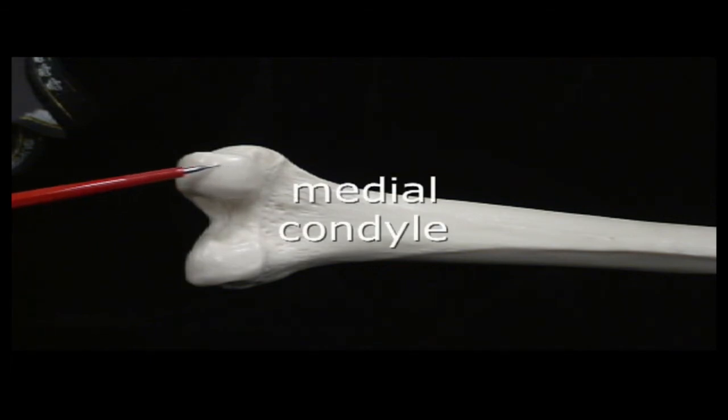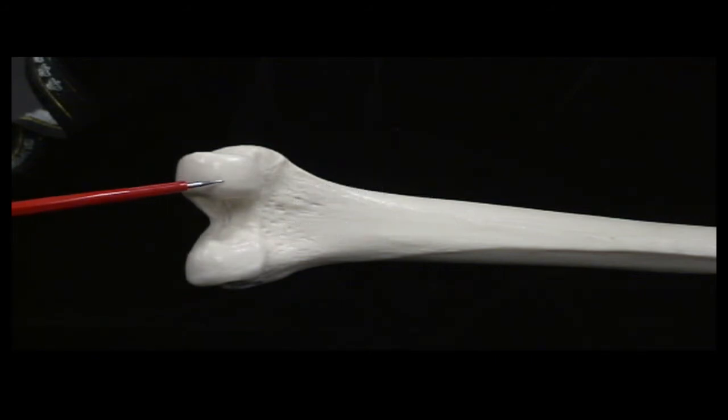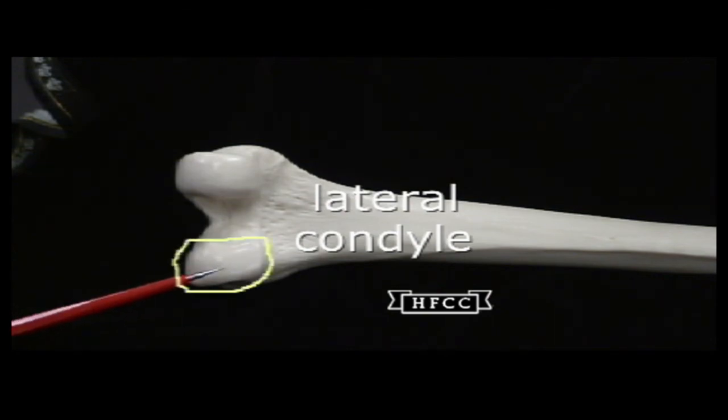Here the smooth again, the medial condyle, much more prominent on the posterior view. Again articulating with the tibia. And the lateral condyle, another articulator of the tibia.